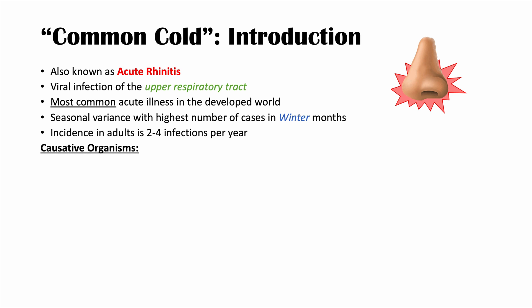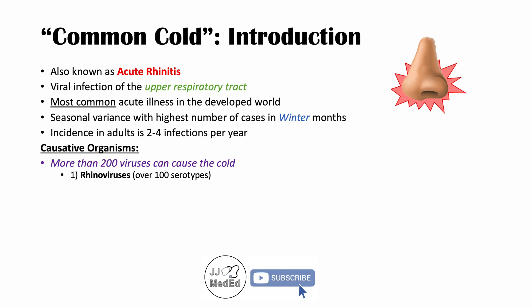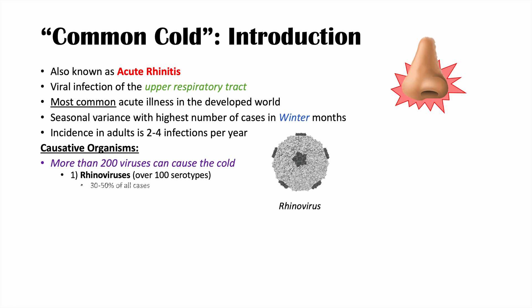There are many causative organisms that can cause the common cold, and they are all viruses. There are more than 200 viruses that can cause the cold. The number one category are the rhinoviruses, with over 100 serotypes. 'Rhino' means nose, so they are very easy to remember. They account for approximately 30 to 50% of all cases of the common cold.